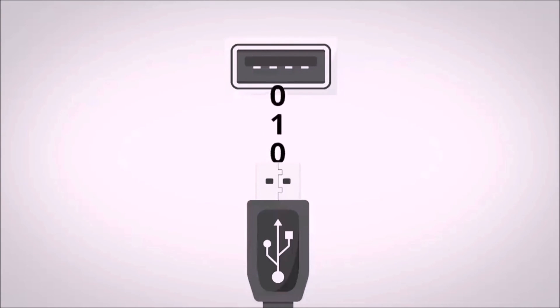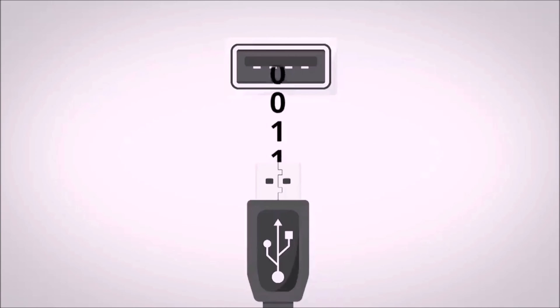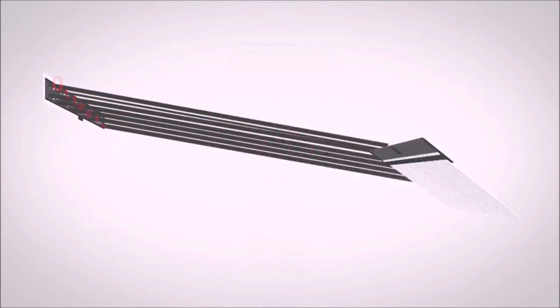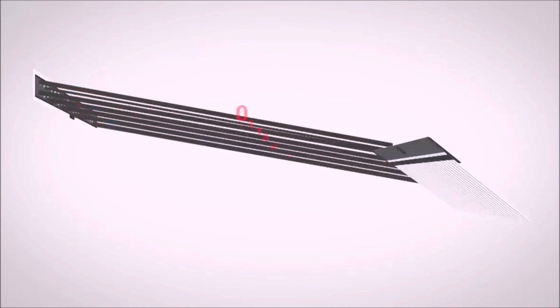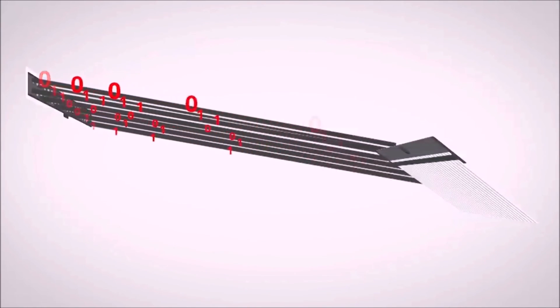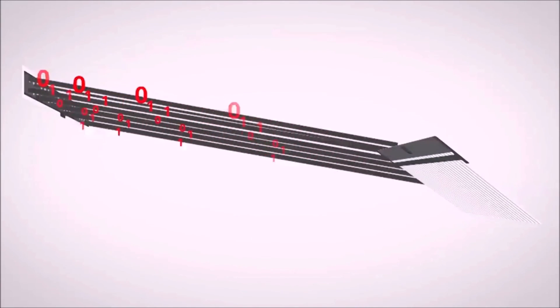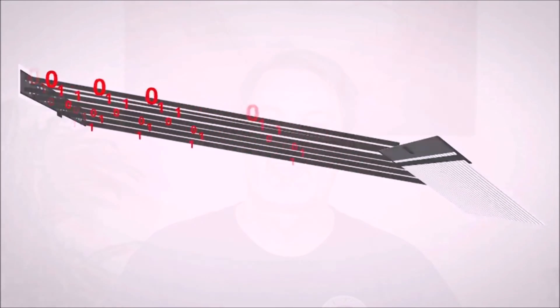This data is electronic data. It's actually a series of ones and zeros stored electronically, and there's a lot you can learn about how that works — how you can store any kind of information in ones and zeros. Anything from images to text to video, all of it can be stored in ones and zeros, and it's pretty amazing.